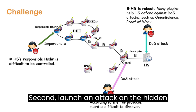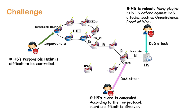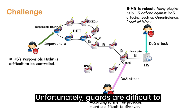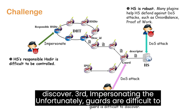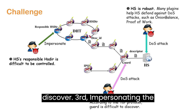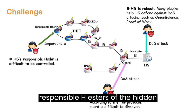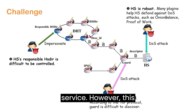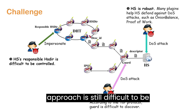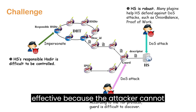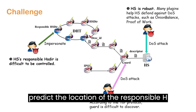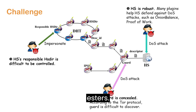Second, launch an attack on the hidden service's guards. Unfortunately, guards are difficult to discover. Third, impersonating the responsible HSDirs of the hidden service. However, this approach is still difficult to be effective because the attacker cannot predict the location of the responsible HSDirs.